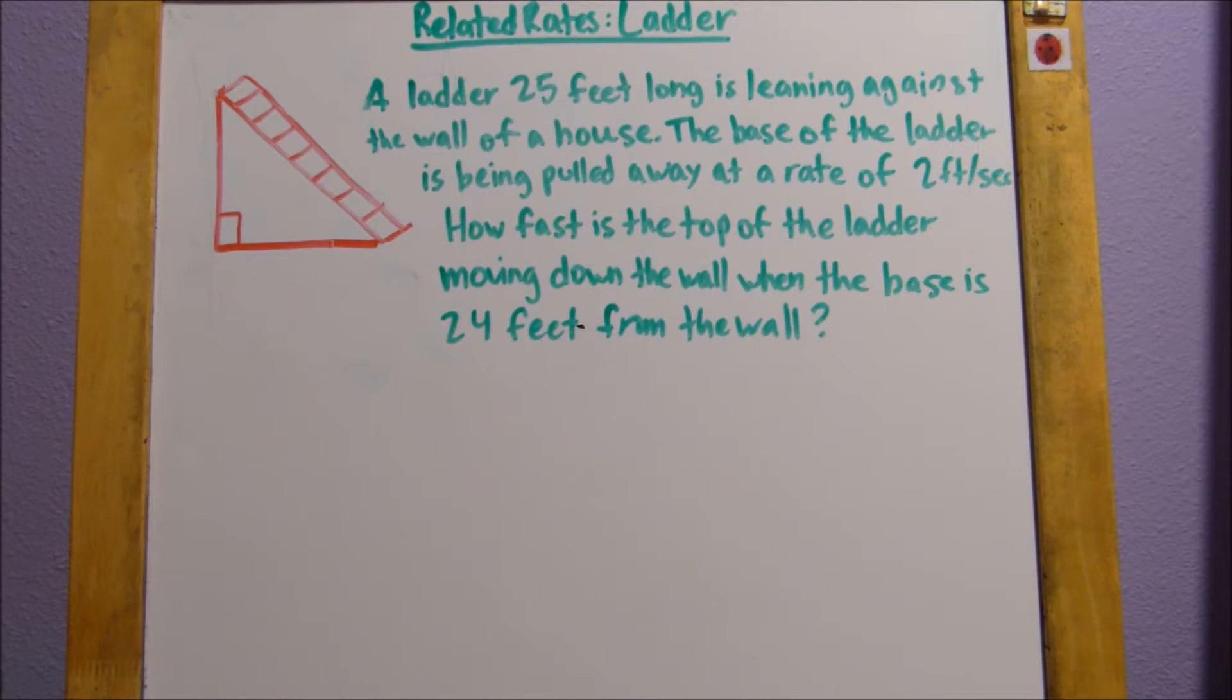Okay, so today we're going to talk about related rates. Here we have a ladder problem. This says, a ladder 25 feet long is leaning against the wall of a house. The base of the ladder is being pulled away at a rate of 2 feet per second. How fast is the top of the ladder moving down the wall when the base is 24 feet from the wall?